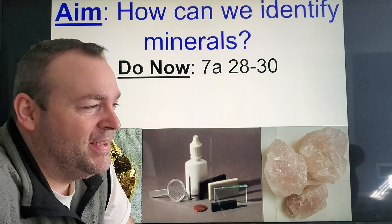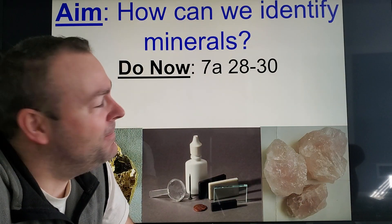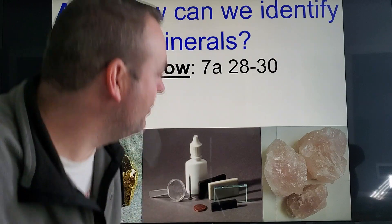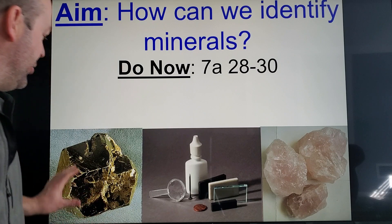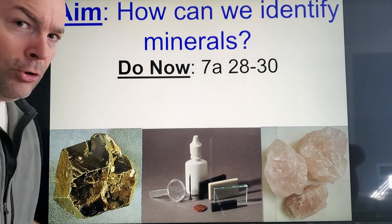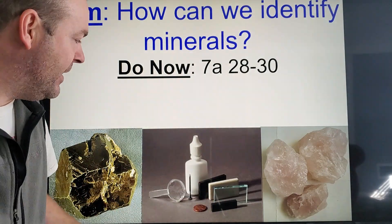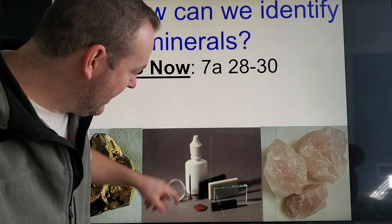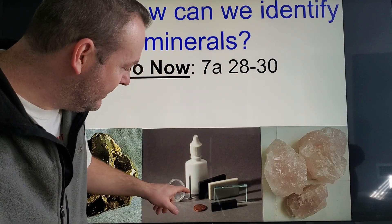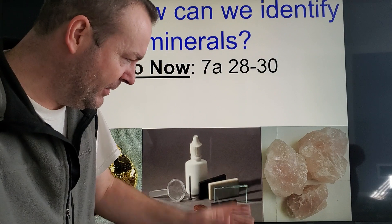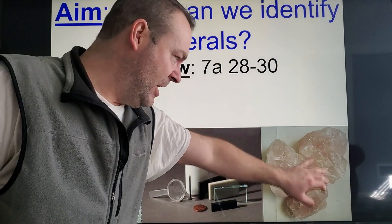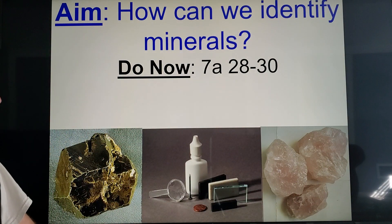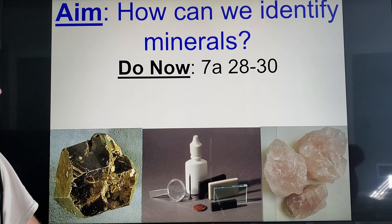There are several tests we can go through — some of them have pretty funny names — but let's get going. You can see we have a shiny mineral here that looks like gold, but we don't know. You have to do the tests. Some of the tools include a glass plate, porcelain plate, bottle of acid, magnifying lens, a nail, and a penny.